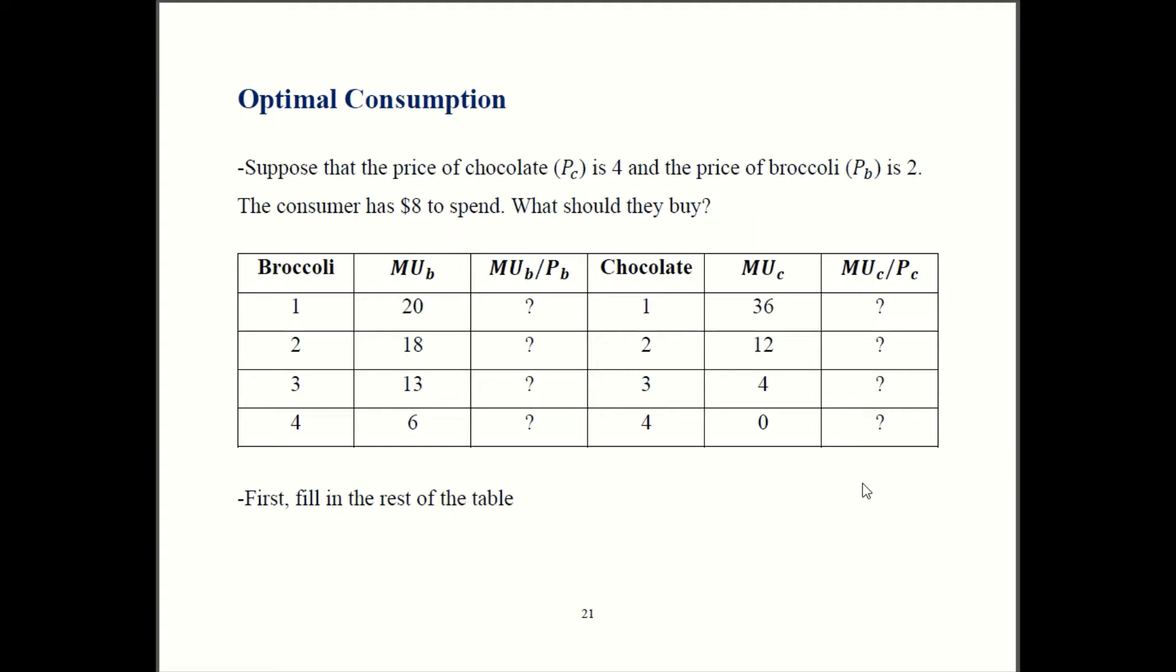All right, I'll assume you have worked through that. So the first part's not that bad. We had the price of broccoli was $2, so 20 divided by 2 is 10 and 18 over 2 is 9. 13 over 2 is 6.5 and 6 over 2 is 3. So that's how we got this column over here.